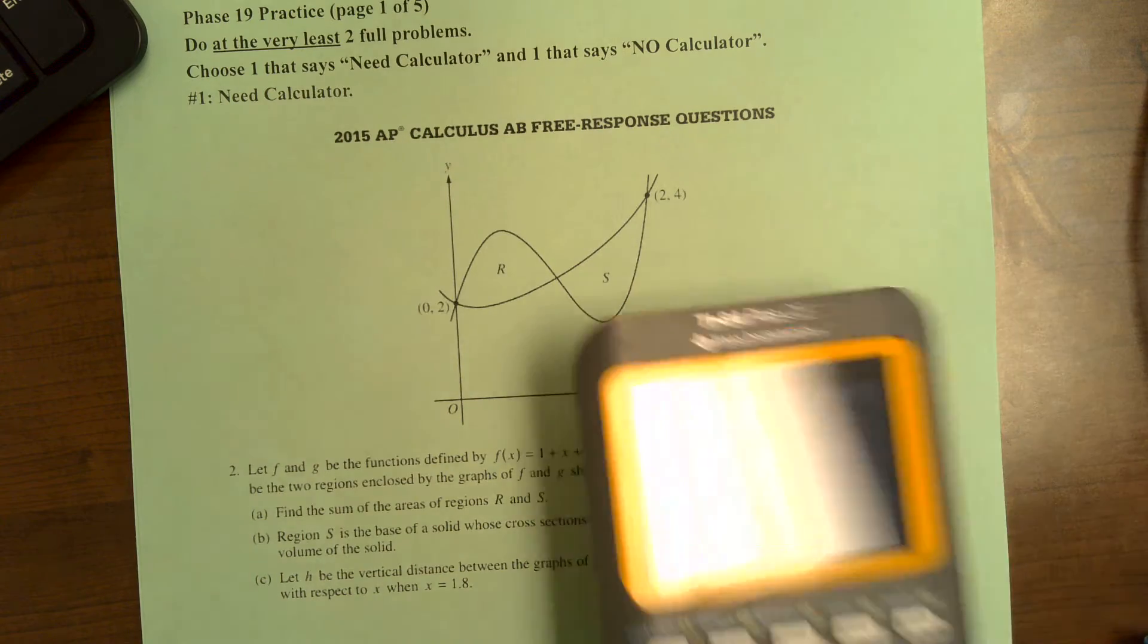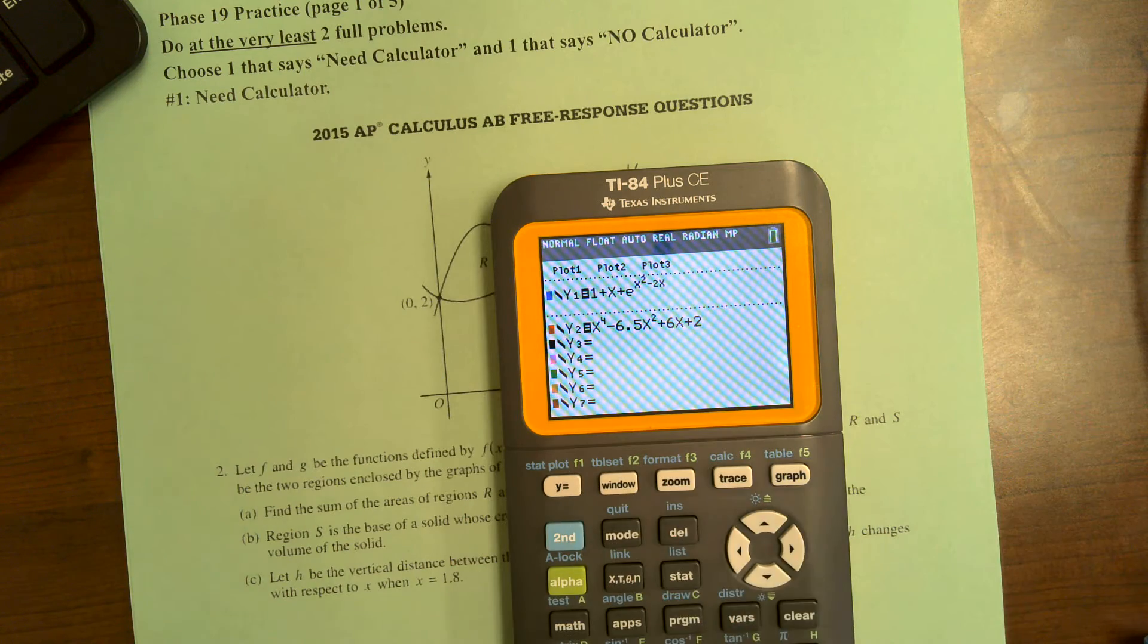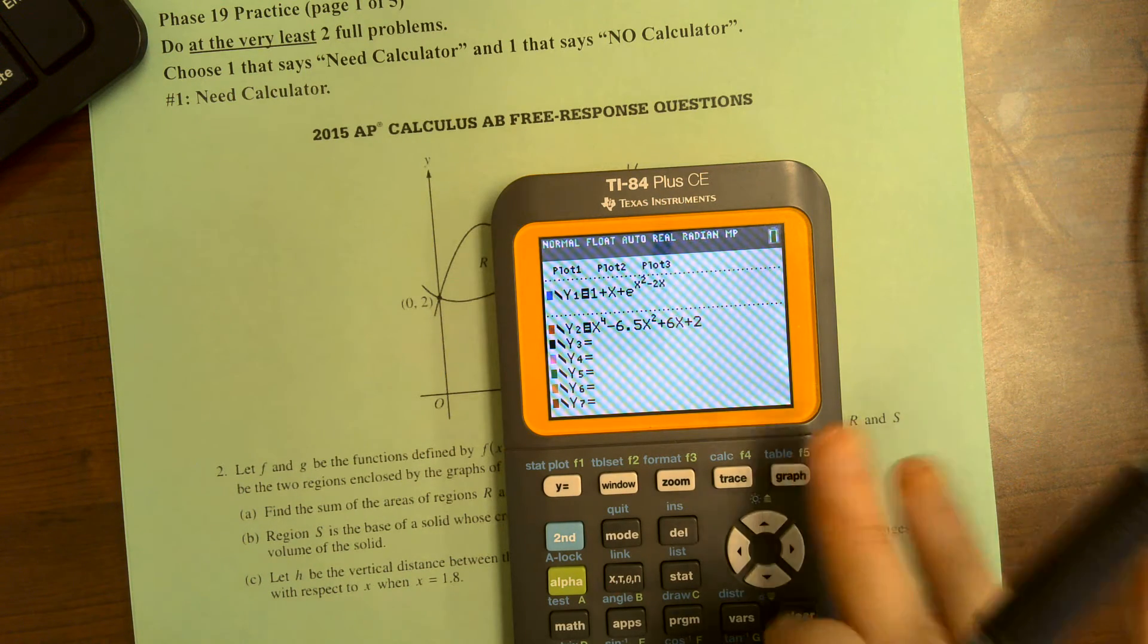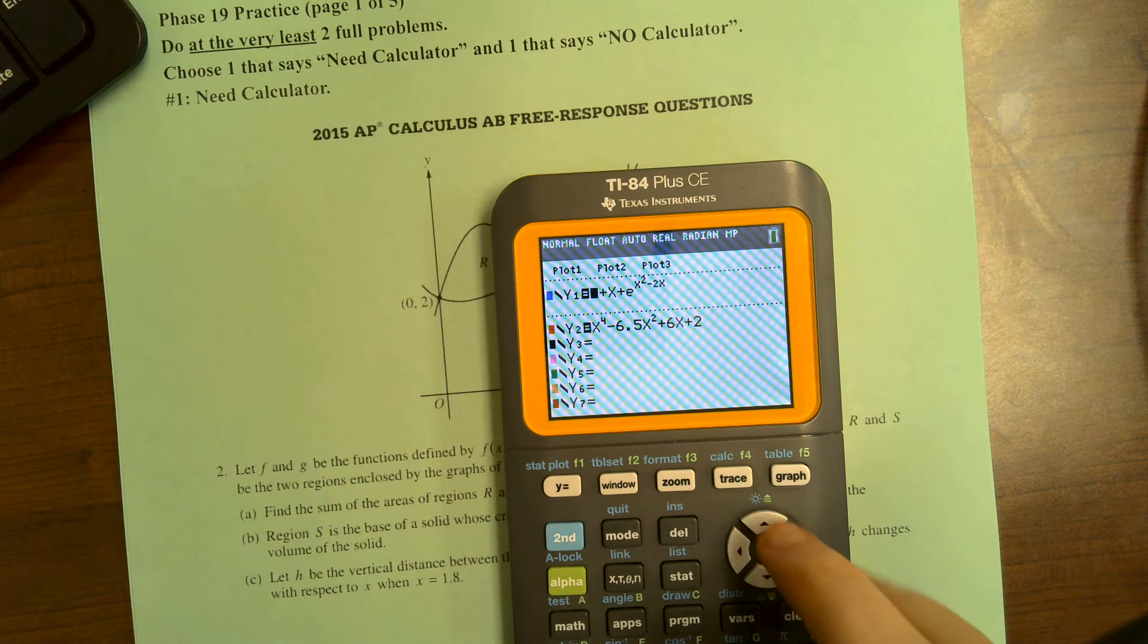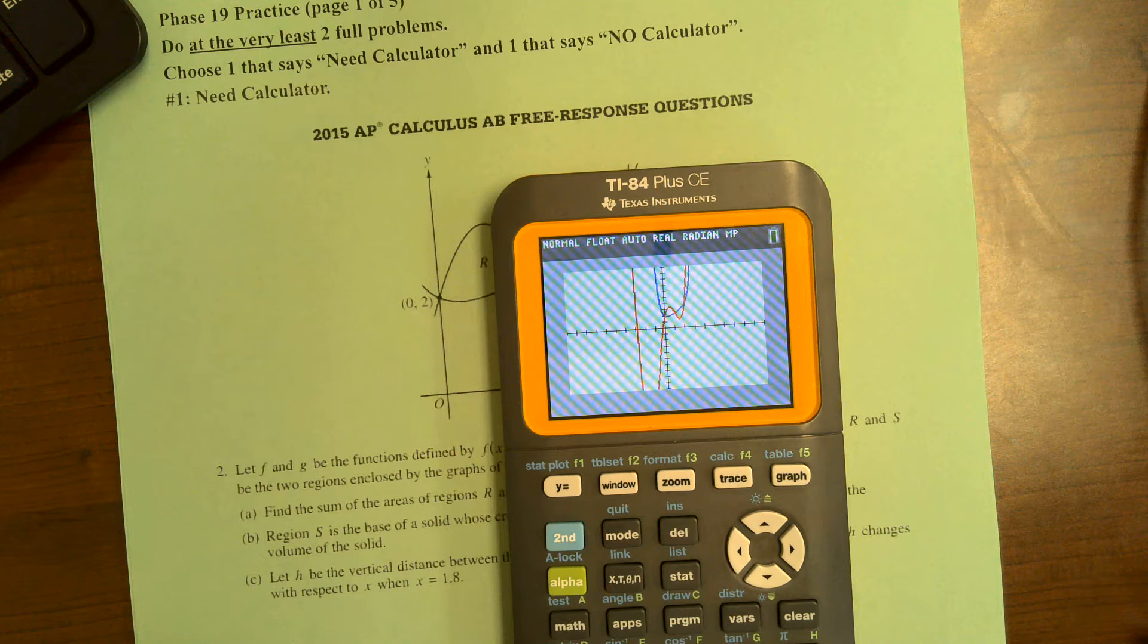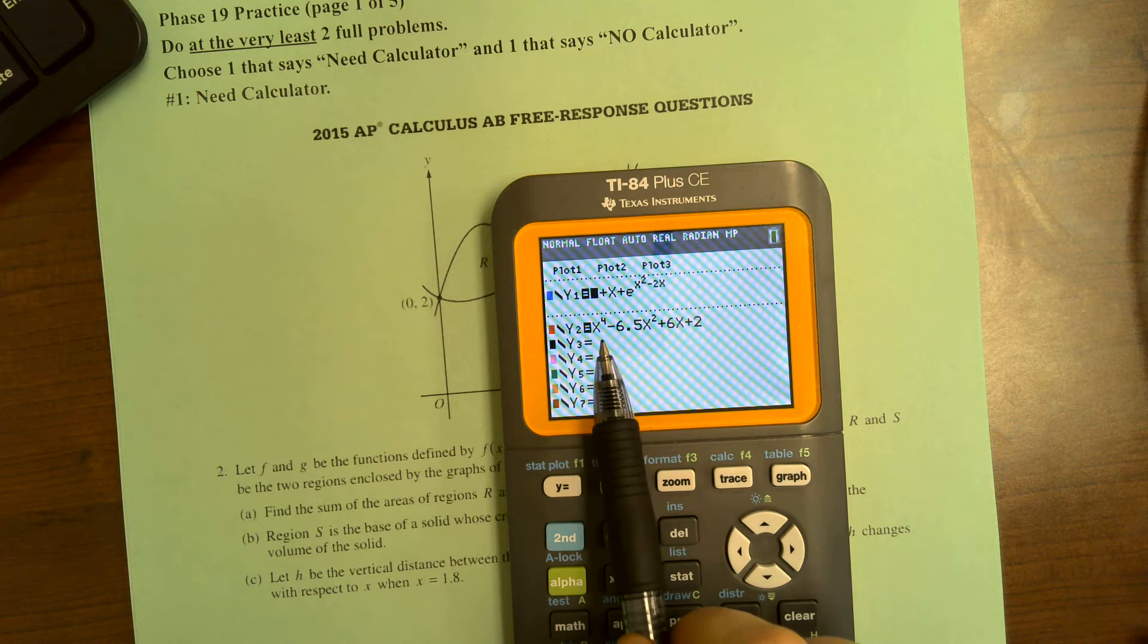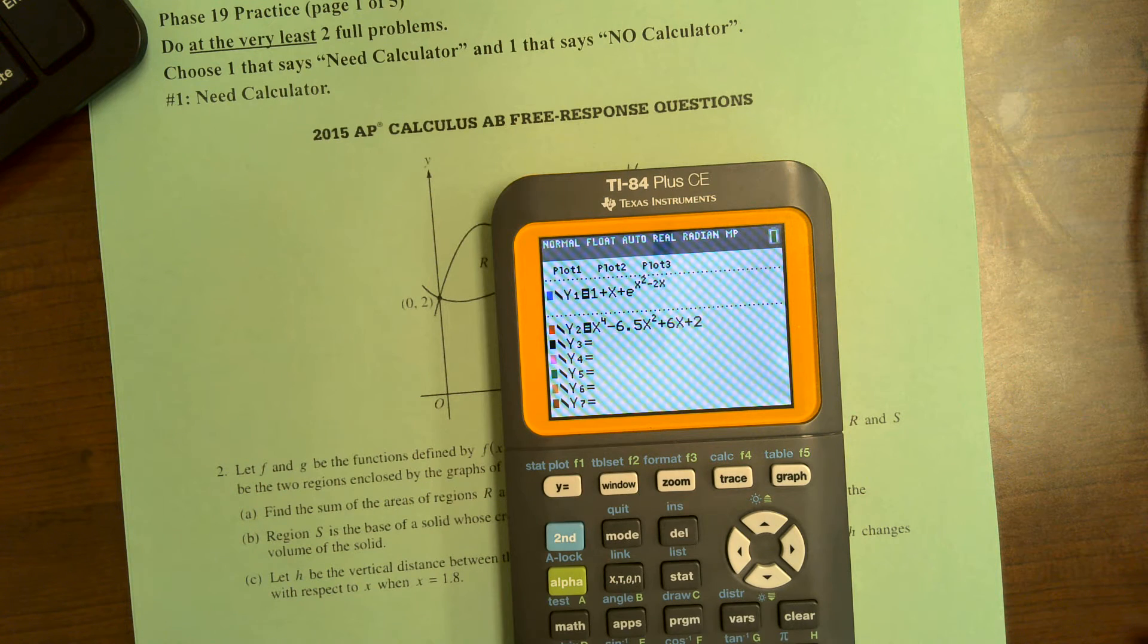I'm going to label them f and g. So first I graph them here, I type them in. So when I graph this, that's what it looks like. The red one is the quartic, that's a to the fourth polynomial. And then the blue one is the one with e in it.